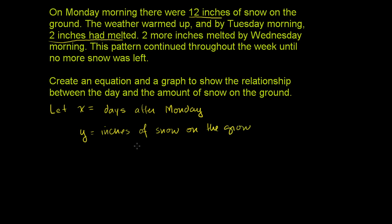One way to think about it is when x is 0, when we're on Monday, when we're 0 days after Monday, we're going to have 12 inches of snow on the ground. And then every day after that, we're going to lose 2 inches. So if we're on Tuesday, we're going to have 2 inches times 1, because Tuesday is 1 day. If x is 2, that means we've lost 4 inches, which is the case on Wednesday. So this is our equation: y = 12 - 2x.